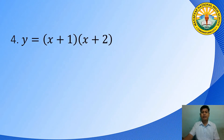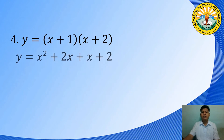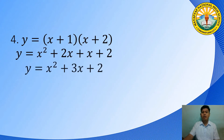Example number 4: y is equal to the quantity x plus 1 times the quantity x plus 2. In this example, we must simplify it first so that we can see if it will become a quadratic function. After doing the FOIL method and simplifying it, we will get y is equal to x squared plus 3x plus 2. That makes the function a quadratic function.